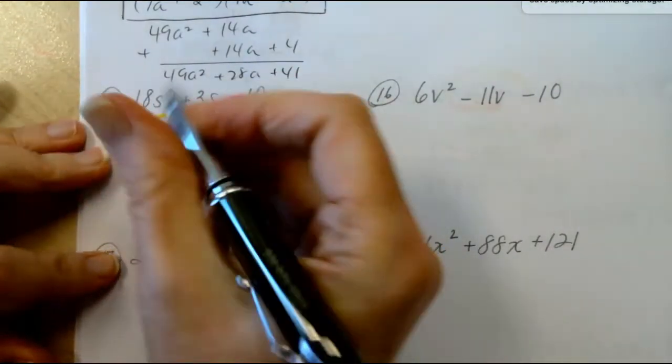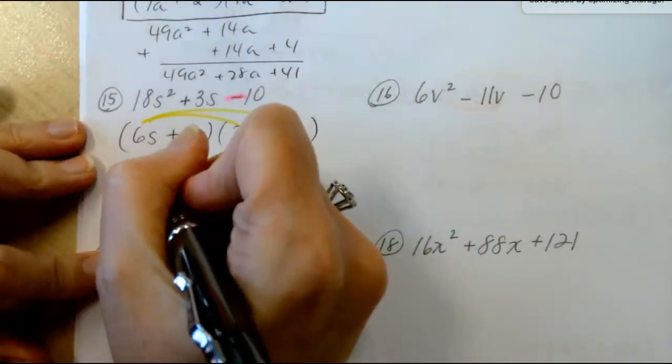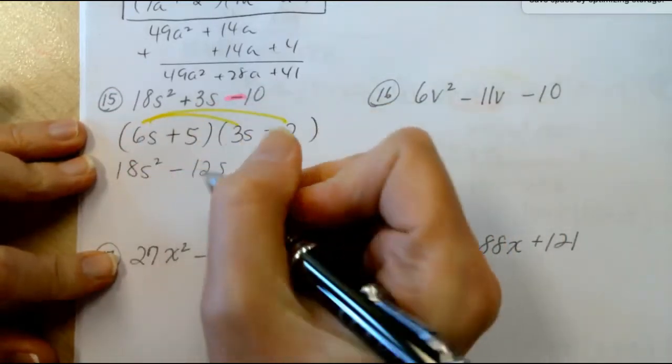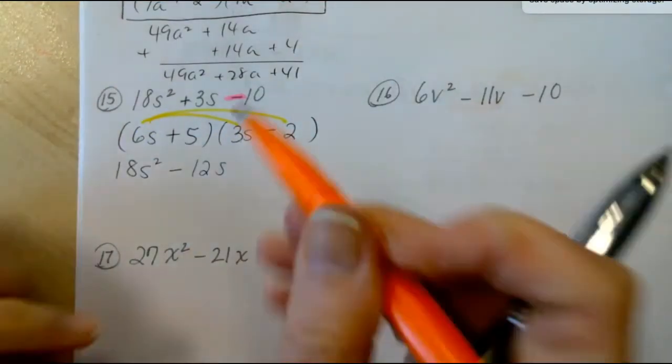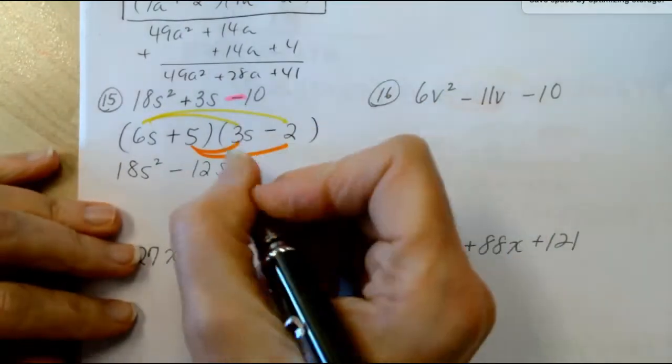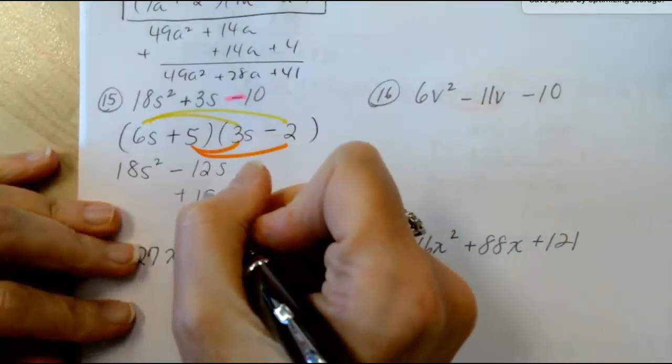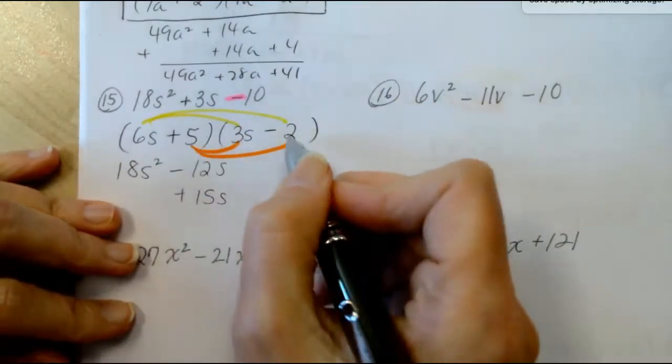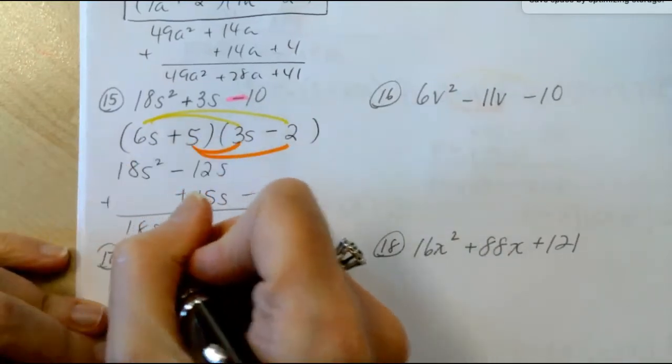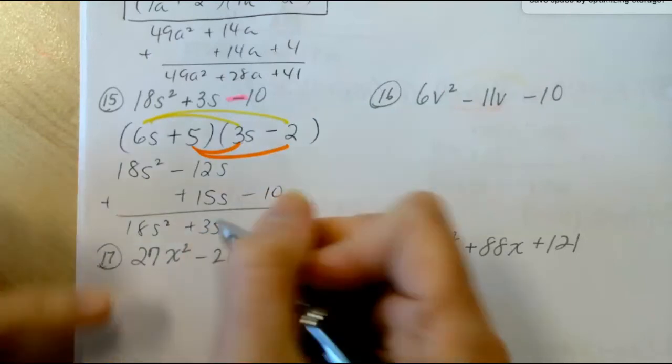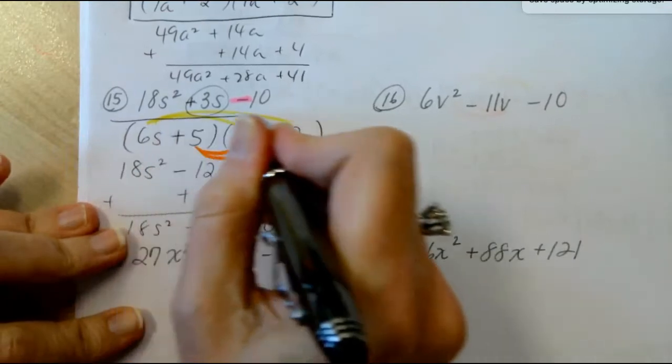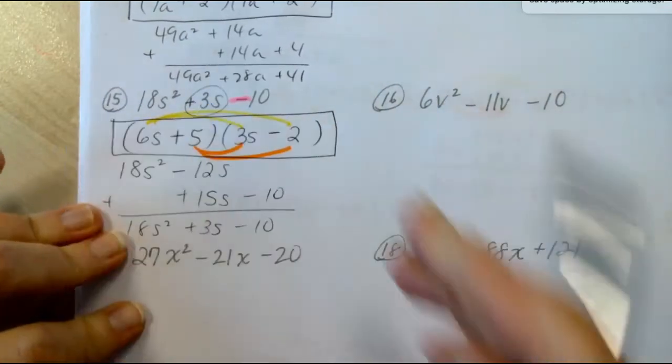Let's do a full check by using the distributive property. 6s times 3s is 18s squared. 6s times negative 2 is negative 12s. Next, we're going to take the 5 through. 5 times 3s is plus 15s. 5 times negative 2 is negative 10. And when we add our like terms, we do indeed get the positive 3s that we were looking for. Therefore, this is our answer.